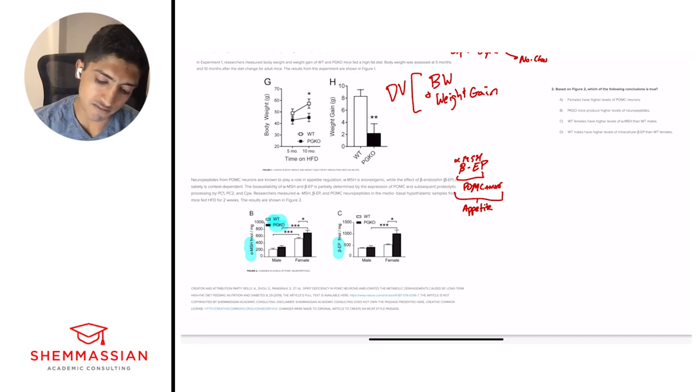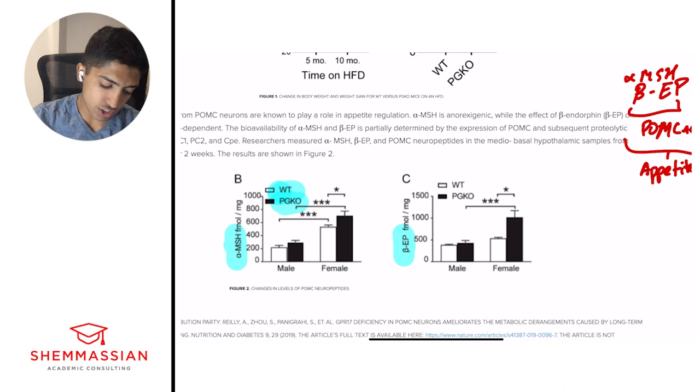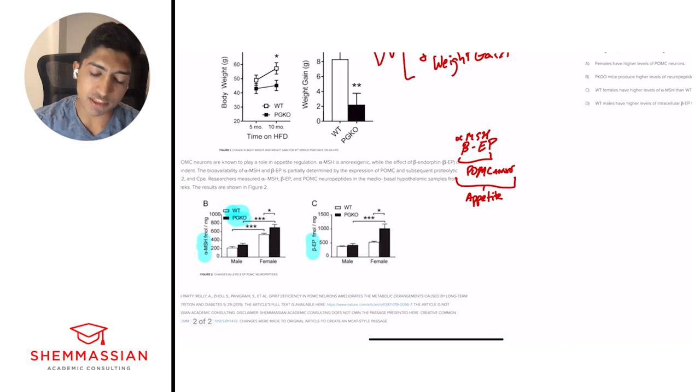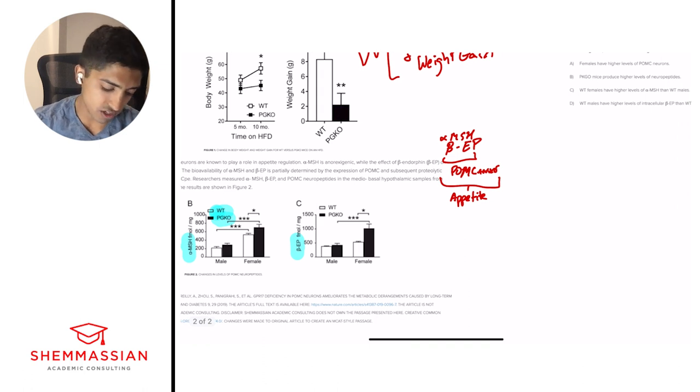Females have higher levels of POMC neurons. Can we take this with the figures shown below? We cannot. We're looking at changes in levels of POMC neuropeptide. It doesn't say anything about the number of neurons or the higher level of neurons. So we can cross A out.